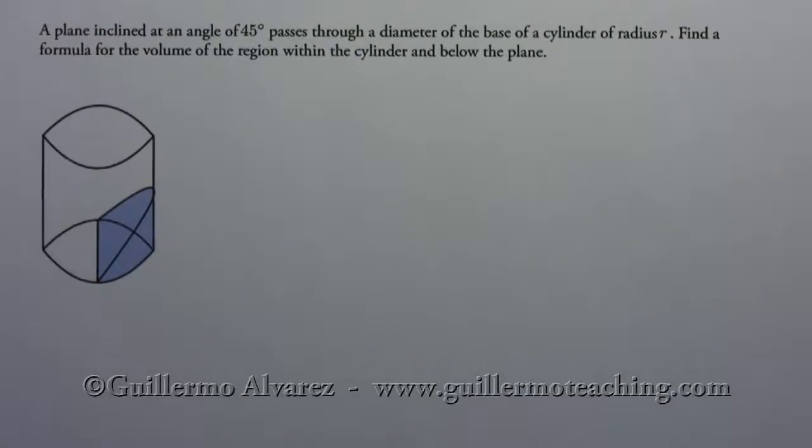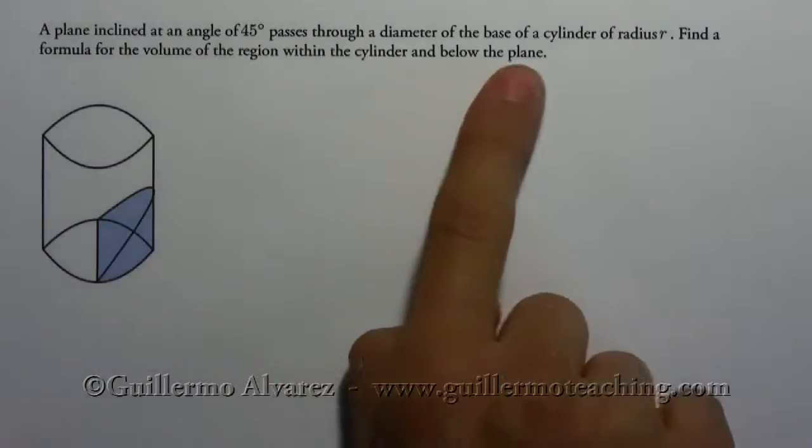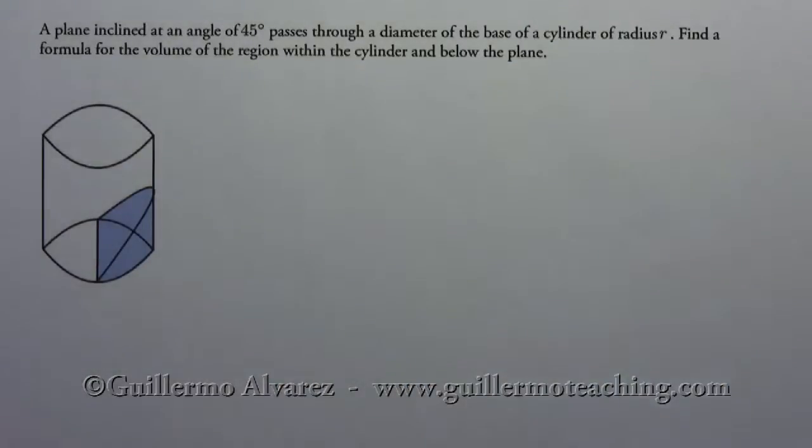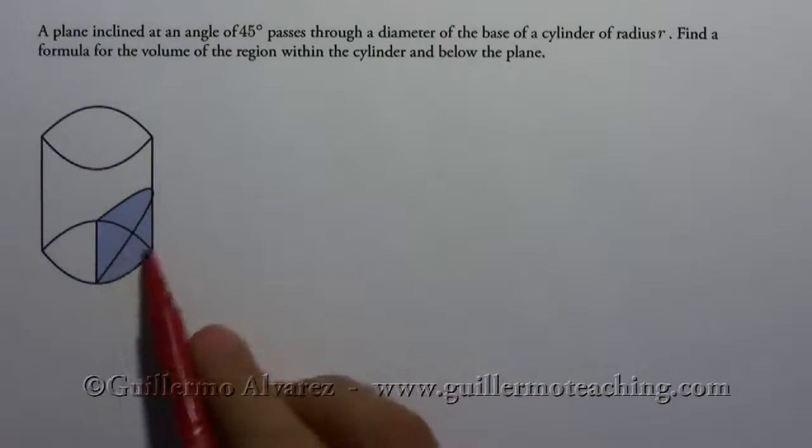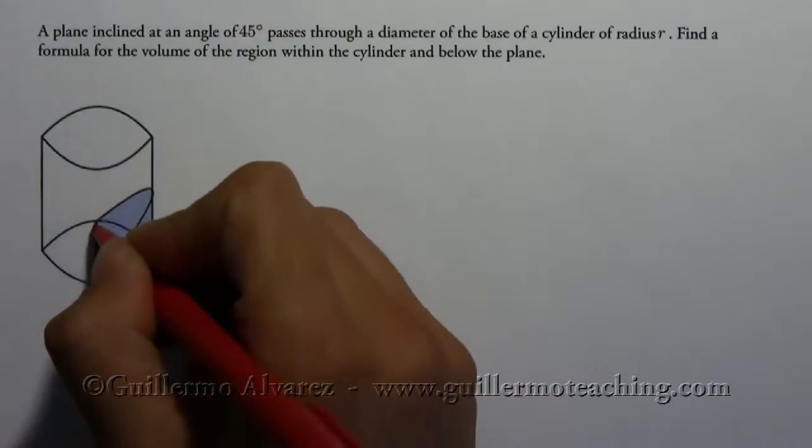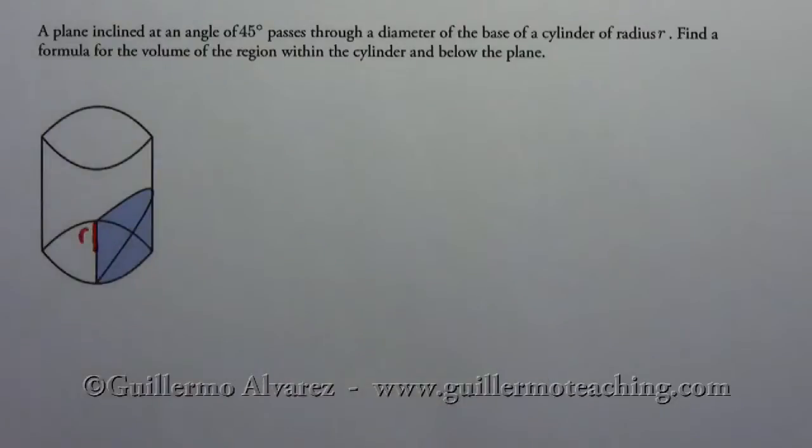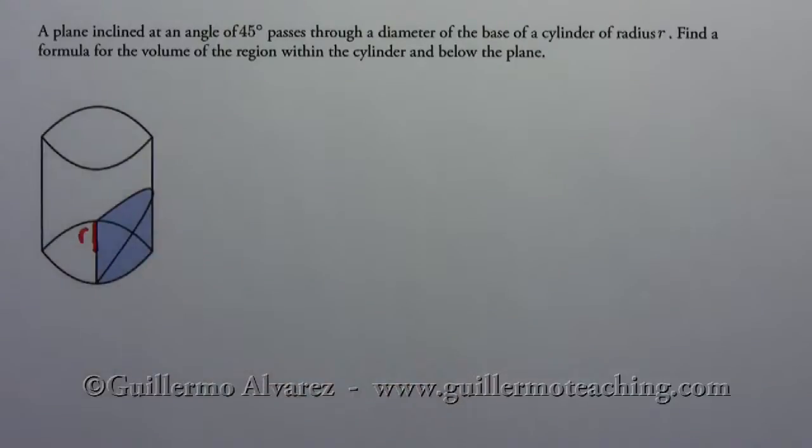Okay, this problem is a little tricky, but we could figure it out using the same ideas that we've been talking about so far. We have a plane inclined at an angle of 45 degrees, and it passes through a diameter of the base of a cylinder of radius R. And we also know that the angle here is 45 degrees, and we'll see how to use that later.